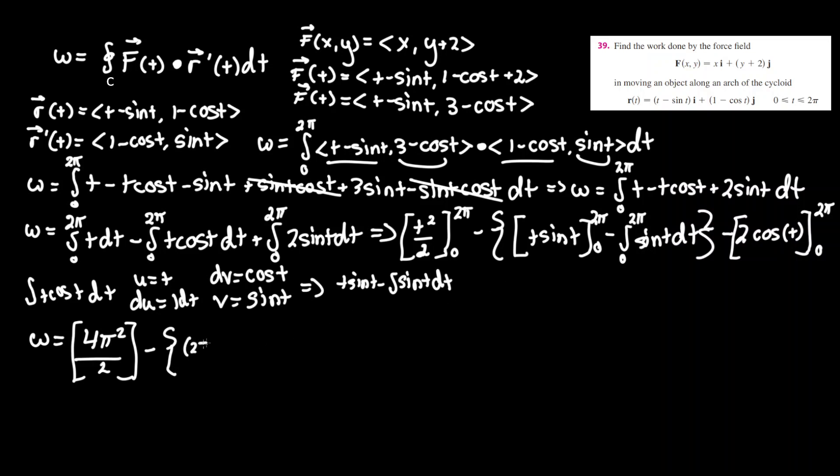We got 2pi sine of 2pi, minus the lower bound of just 0, since we know 0 will be t, minus 2, I'll leave that on the outside.